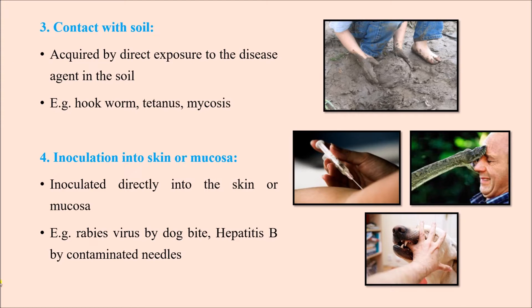Then we have inoculation into the skin or mucosa — inoculated directly into the skin or mucosa, like the rabies virus by dog bite. If a dog has rabies virus present in its saliva, when the dog bites, the virus is inoculated into the deeper tissue through the bite wound. Also, hepatitis B by contaminated needles, and very rarely HIV infections can also occur this way. A snake bite is another example.